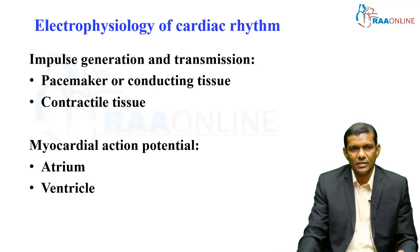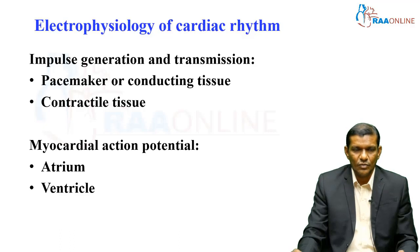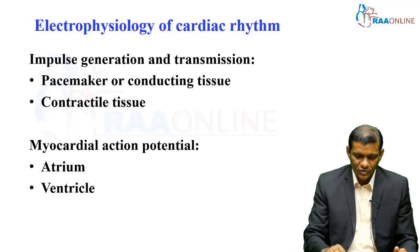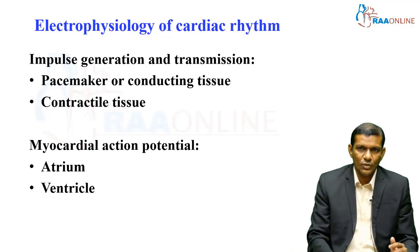So basically there are two types of tissue: the conducting tissue and the contractile tissue. Before going into the antiarrhythmic drugs, we need to know about the action potential of the cardiac myocardial cell. There is a slight difference in the action potential between the atrium and the ventricle, which we will see one by one.